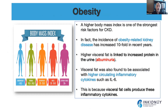Obesity is also linked to inflammation in chronic kidney disease. Higher body mass index is becoming one of the strongest risk factors for CKD, and the incidence of obesity-related kidney disease has increased tenfold in recent years. There are two types: visceral obesity, where fat accumulates around the organs inside the body, and subcutaneous obesity, where fat sits under the skin. Visceral fat can produce large amounts of inflammatory cytokines such as IL-6, leading to body-wide inflammation. Data also show that higher visceral fat is linked to increased protein in the urine.